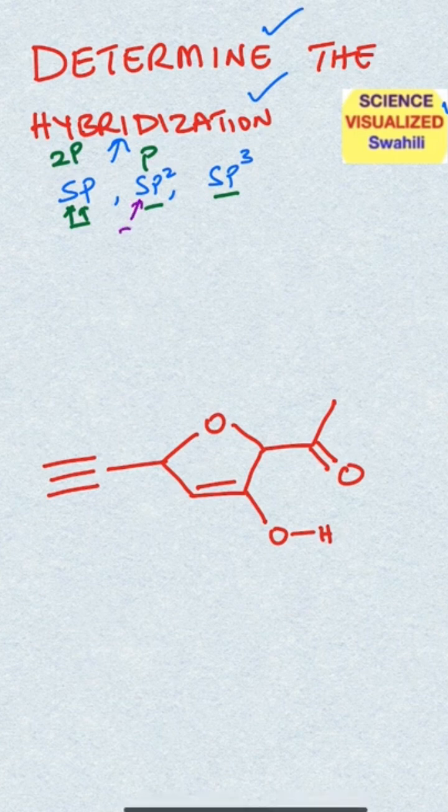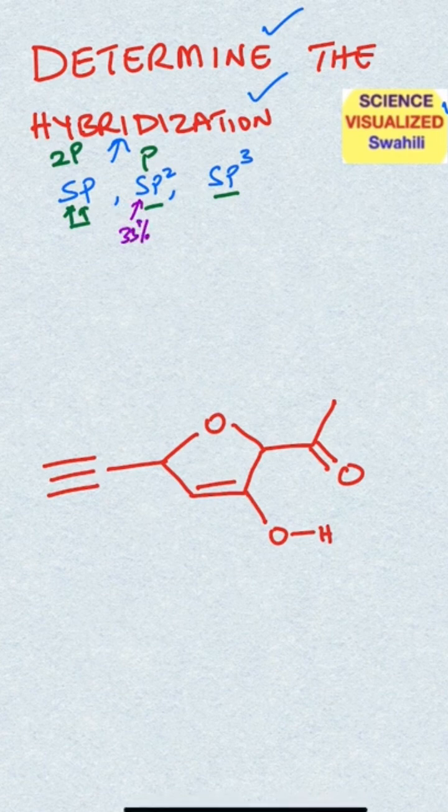So in sp2 you have about 33% s character and about 66% p character.